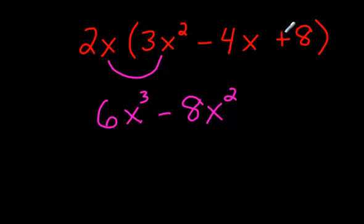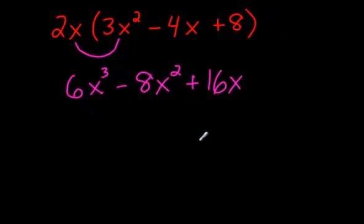And the last one, 2x times 8. Well, just take 8 times 2, which is 16. And don't forget this guy. He tags along. He stays with him. And that is x. And that is done. You're done the question. Okay?